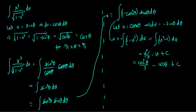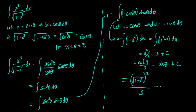Now we need to know what cosine theta is in terms of x. We know that x equals sine theta. Lucky for us, we already know cosine theta equals the square root of 1 minus x squared. So the final answer is the square root of 1 minus x squared to the third power over 3, minus the square root of 1 minus x squared, plus C. And that's the integral. I hope this helps. Take care, bye.